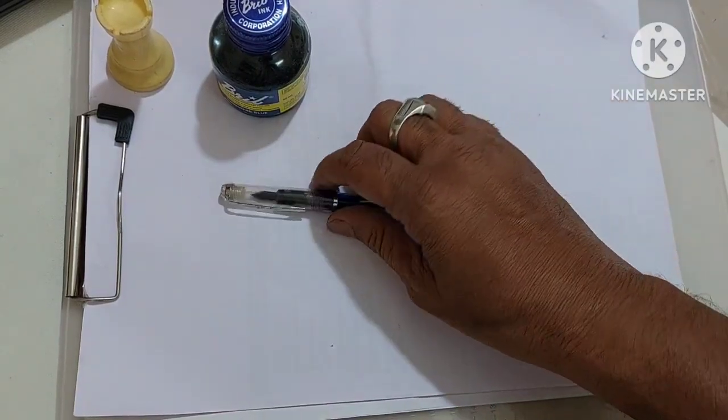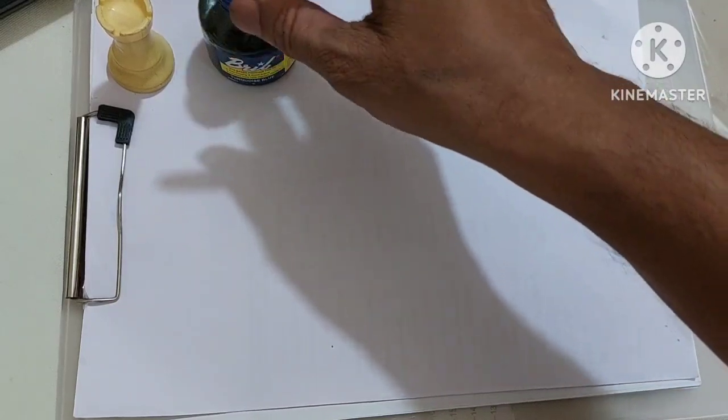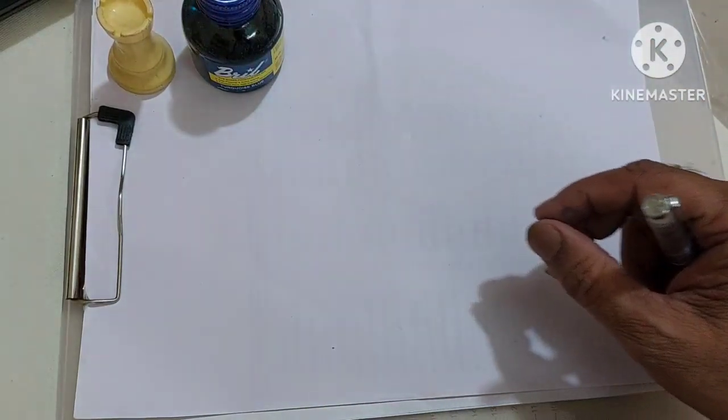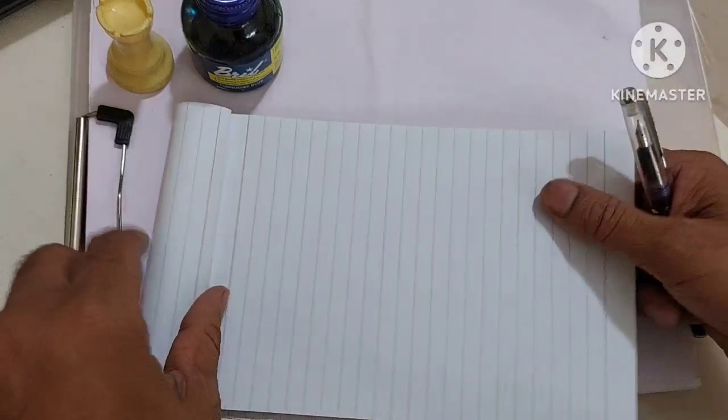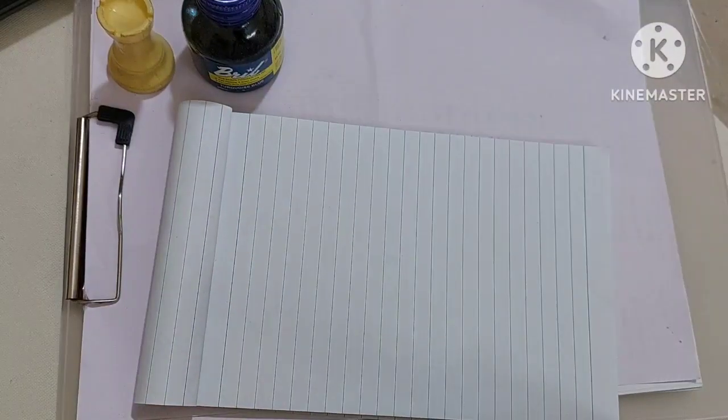Let me show you the writing sample of it. Now in this I have added the Brill Turquoise blue ink and now I am going to write and show you some writing samples.